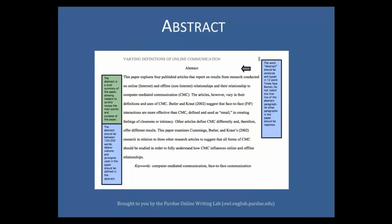Start a new page to create your abstract. If you have inserted a header, this page should already include the page header with your title in all capital letters. On the first line, center the word 'Abstract' without italics, bolding, underlining, or quotation marks. The first line of the abstract should not be indented. The abstract should be a concise 150 to 200 word summary of your research. You can also include keywords from your paper underneath your abstract — to do this, type, italicize, and indent the word 'Keywords' after the abstract, then type a few keywords in normal typeface.